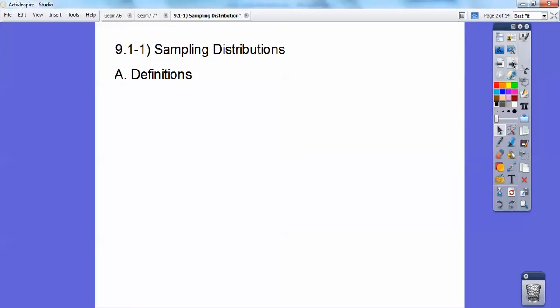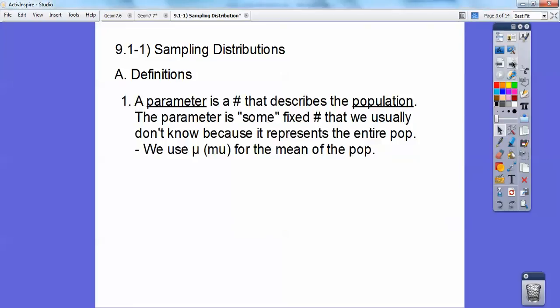Let's see definitions. A parameter is a number that describes the population. The parameter is some fixed number that we usually don't know because it represents the entire population. It's hard to get the entire population, so we're going to get what is called a statistic in just a second. So we use this mu—it looks like an m with a longer tail on the left. This mu is the characteristic for the mean of the population.